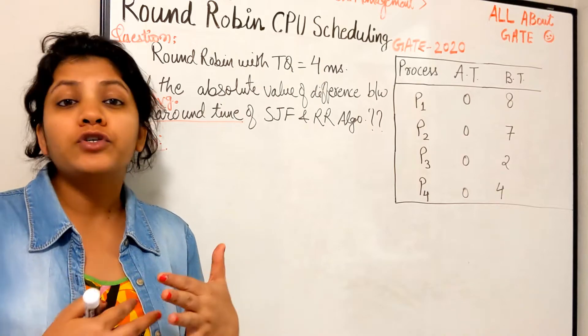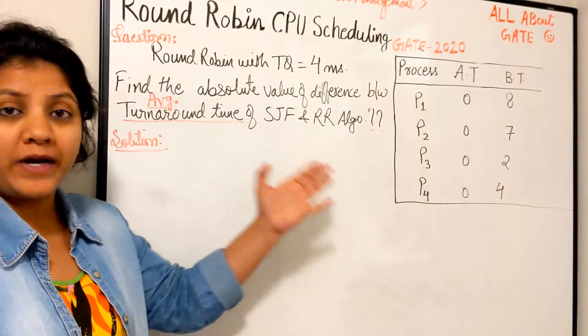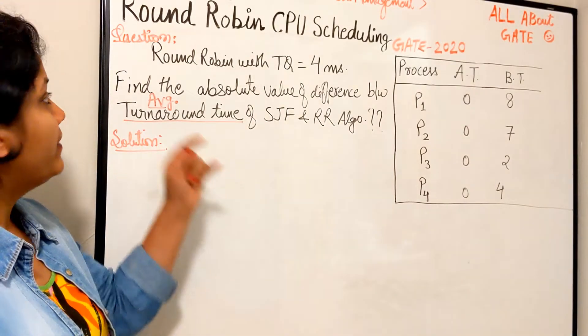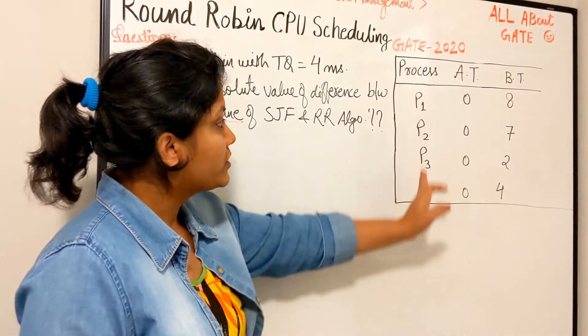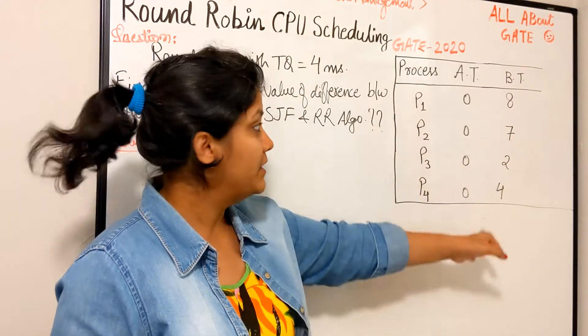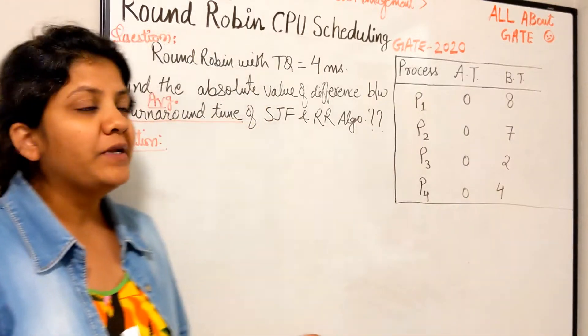It will be a revision once again for you. This was a numerical based question worth two marks. The question is straightforward. We've been given four processes P1, P2, P3, P4. Their arrival times are 0 and the burst times are given in milliseconds.